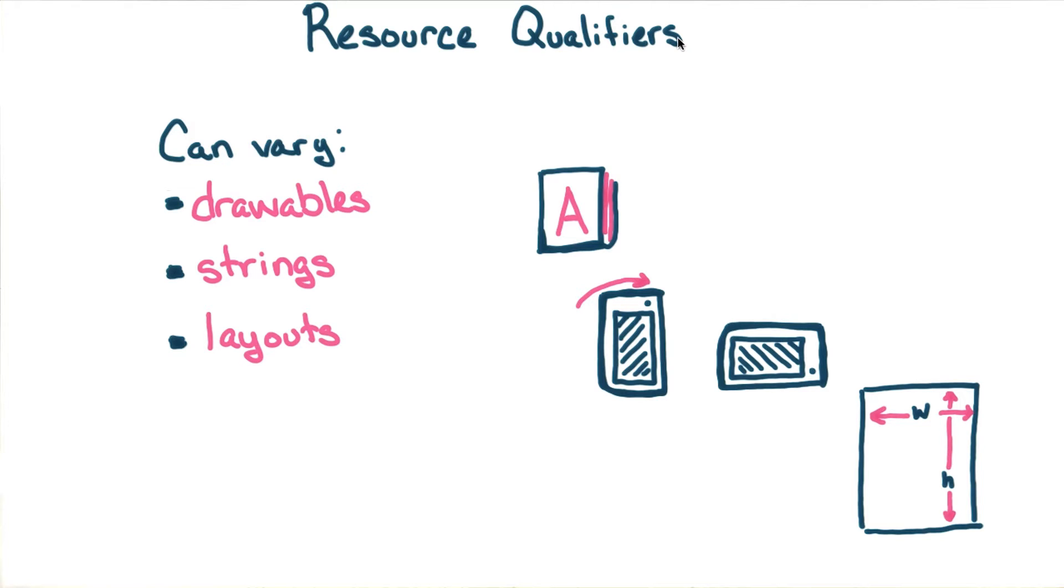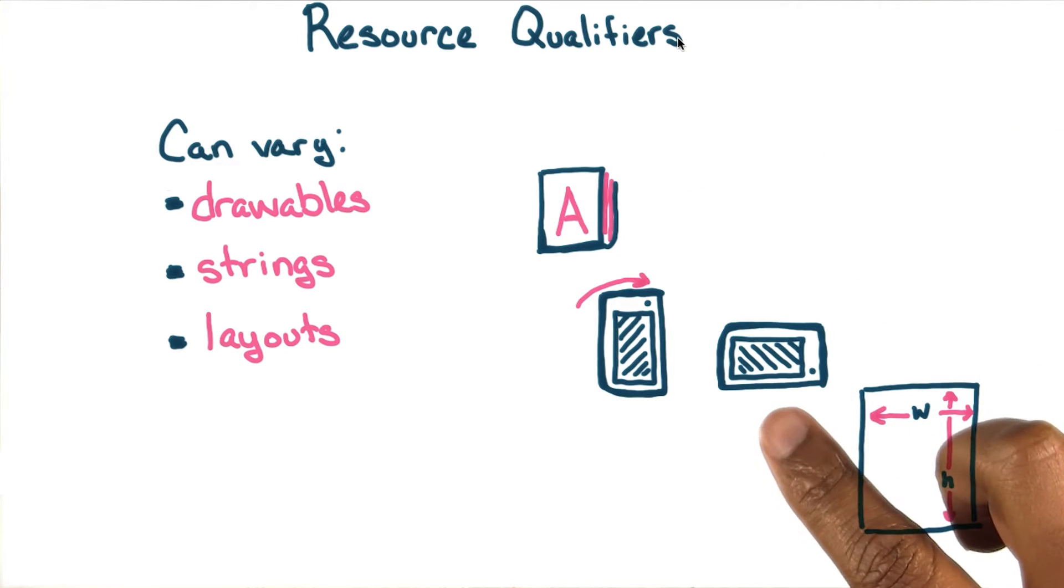If you remember, we talked about resource qualifiers in lesson one. The idea is that you can vary things like drawables, strings, even layouts based on qualifiers like language and device orientation.